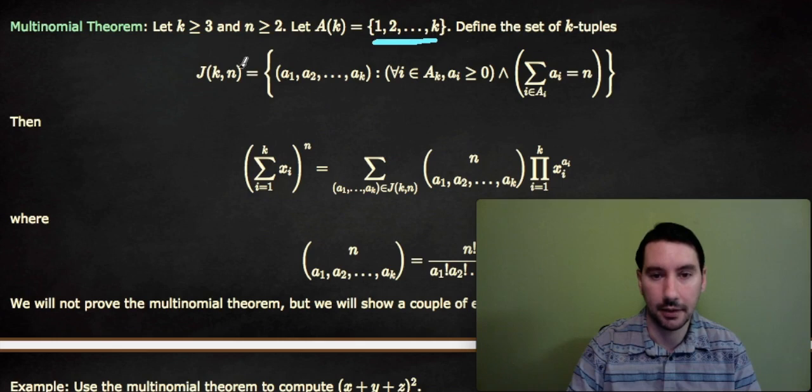And we're going to define the set of k-tuples J_kn equals (a₁, a₂, up to a_k) such that for all i in a_k, a_i is bigger than or equal to 0, and the sum over i in a_k of the a_i equals n.